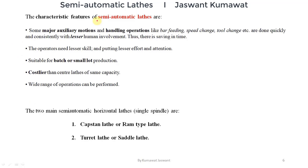So let's discuss semi-automatic lathes. Regarding the characteristics of semi-automatic lathes: major auxiliary motions and handling operations such as bar feeding, speed change, and tool change can be performed quickly with lesser human involvement. Because many handling operations are performed automatically, time is saved. Here we need less skilled operators — we only need a skilled person during initial setup; after that, semi-skilled operators can also do the work. These machines require lesser effort and attention from the operator.